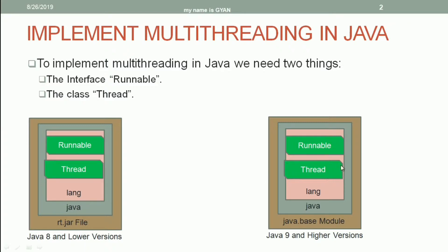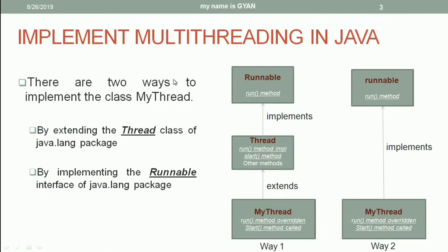We are going to use this class or this interface to create a multi-threaded program in Java. To implement multithreading, we are going to create a class whose name is MyThread. There are two ways to implement the class MyThread: one way is by extending the class Thread of java.lang package, and the other way is by implementing the interface Runnable of java.lang package.